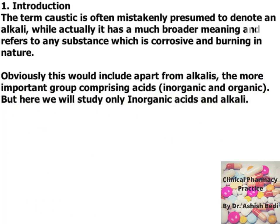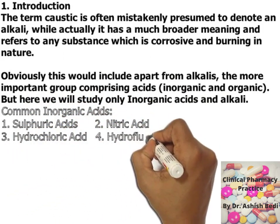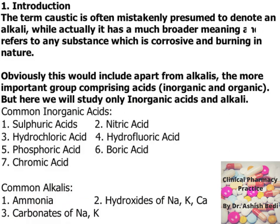Apart from alkalis, caustics include gases and other substances, but here we will study only inorganic acids and alkalis. The inorganic acids include sulfuric acid, nitric acid, hydrochloric acid, hydrofluoric acid, phosphoric acid, boric acid, and chromic acid. The common inorganic alkalis include ammonia and the hydroxides of sodium, potassium, and calcium, as well as carbonates of sodium and potassium.